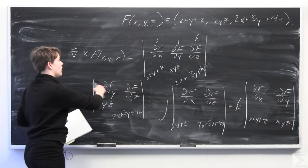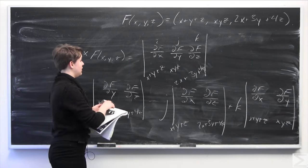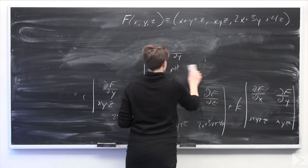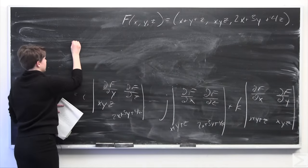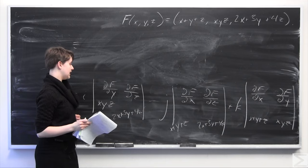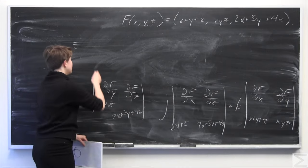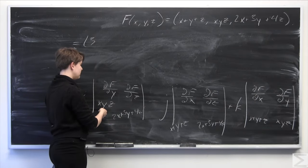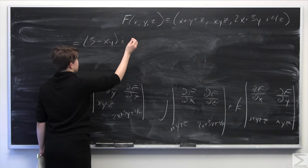We now calculate the determinants of these 2x2 matrices. For the i component: the partial derivative of 2x plus 3y plus 4z with respect to y is 3, minus the partial derivative of xyz with respect to z which is xy. So we get (3 minus xy) times i. For the j component: the partial of 2x plus 3y plus 4z with respect to x is 2, minus the partial of x plus y plus z with respect to z which is 1.